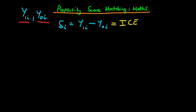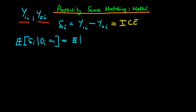In general, what we are more interested in is the average causal effect across our entire sample. Specifically, we are interested in evaluating the expected value of delta i given that di is equal to 1 — that is, the average causal effect for those that were treated. Using the above relationship, this is the same as the expected value of y1i minus y0i given that di is equal to 1.